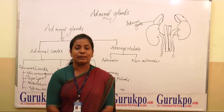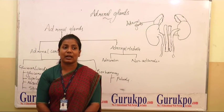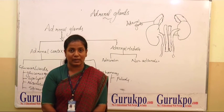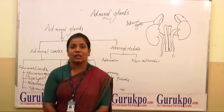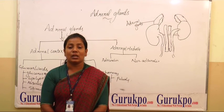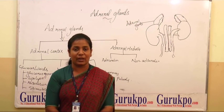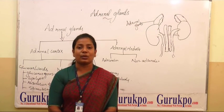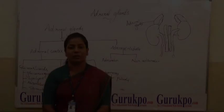Blood supply to the adrenal glands is through many arteries and veins. The arteries are the superior suprarenal arteries, inferior suprarenal arteries, and middle suprarenal arteries. The veins are the right suprarenal vein and the left suprarenal vein. Thank you. For more information you can log on to www.gurukpo.com.